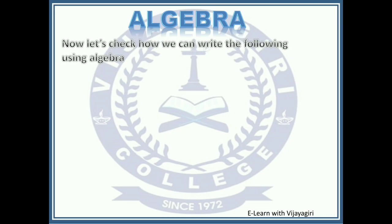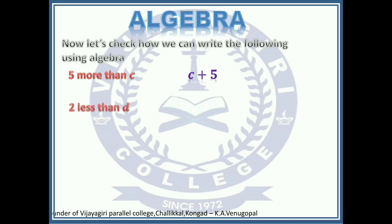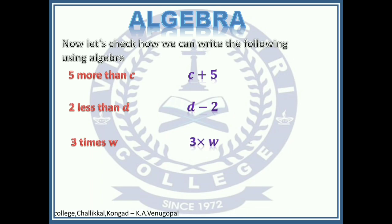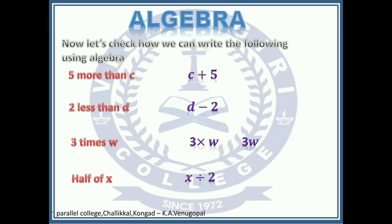Now let's check how we can write the following using algebra. '5 more than c' will be c plus 5 — 'more than' means we use the addition sign. '2 less than d' will be d minus 2 — 'less than' means we use the subtraction sign. '3 times w' — times means we use the multiplication sign, so it is 3w. 'Half of x' — for finding half, we divide by 2, so it is written as x divided by 2, or x by 2.